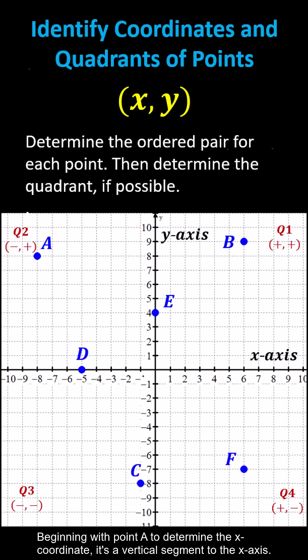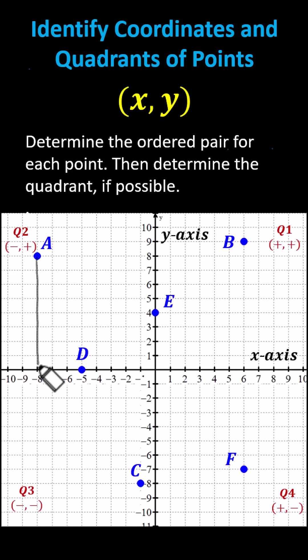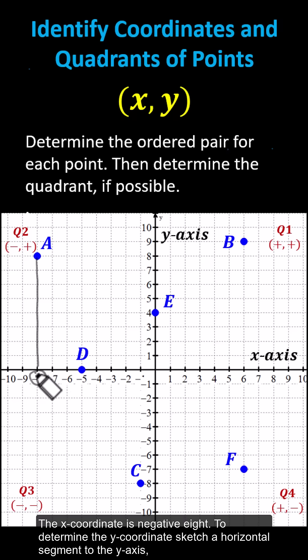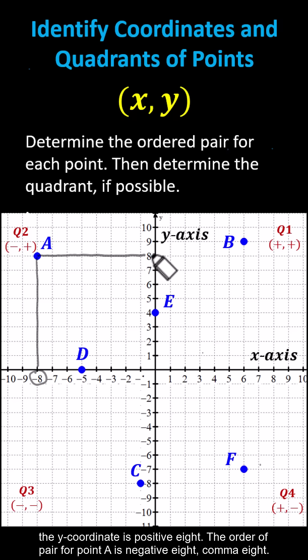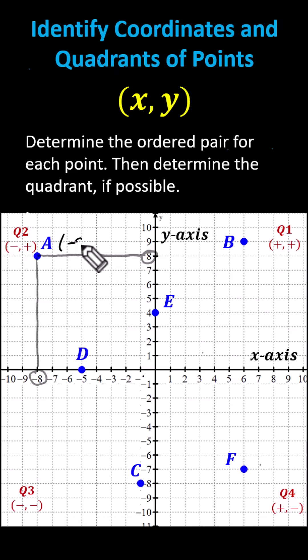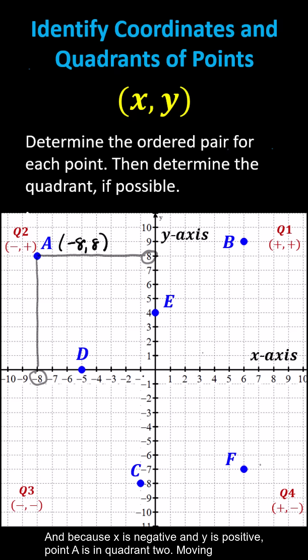Beginning with point A, to determine the x coordinate, sketch a vertical segment to the x axis — the x coordinate is negative 8. To determine the y coordinate, sketch a horizontal segment to the y axis — the y coordinate is positive 8. The ordered pair for point A is negative 8 comma 8. Because x is negative and y is positive, point A is in quadrant 2.